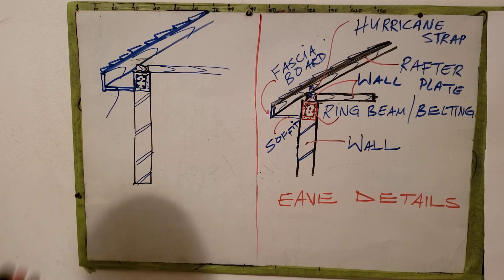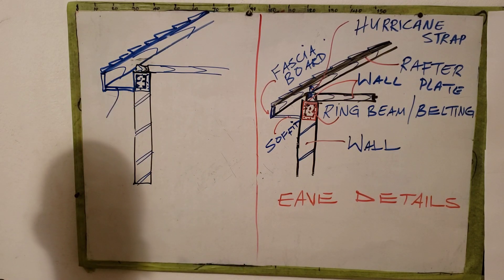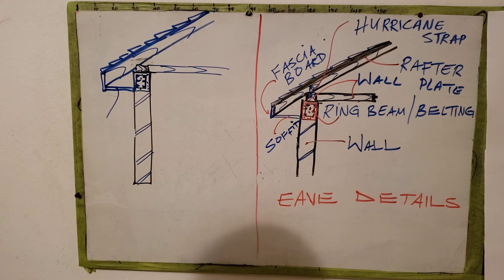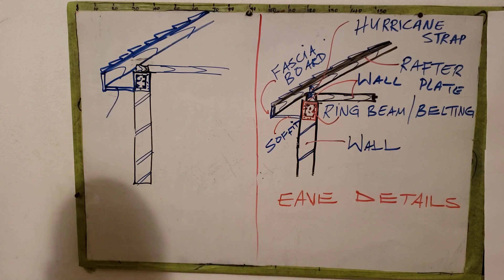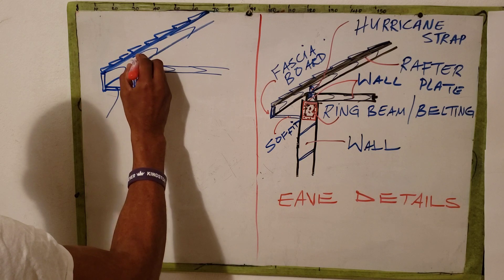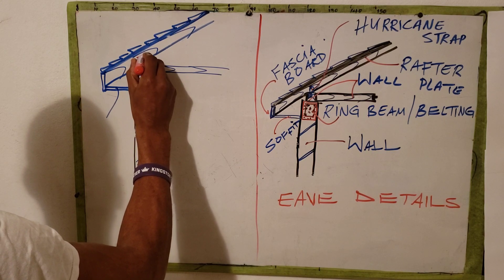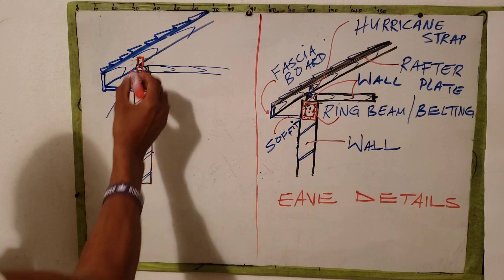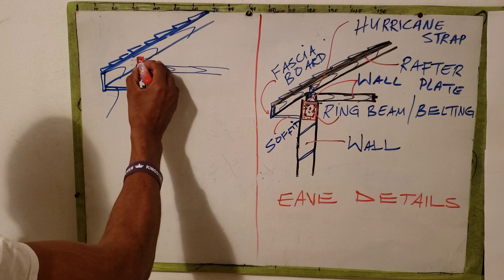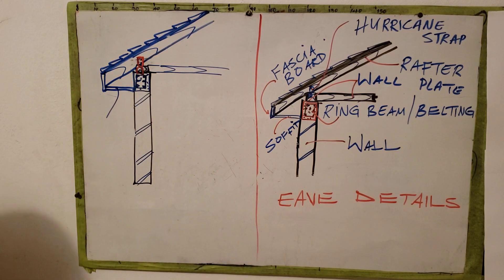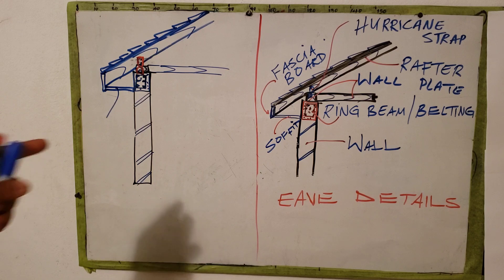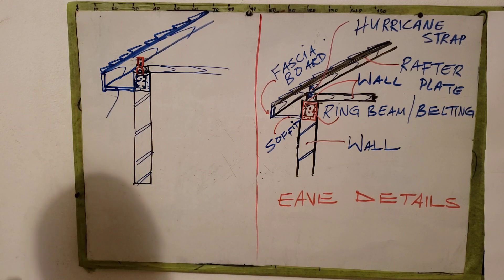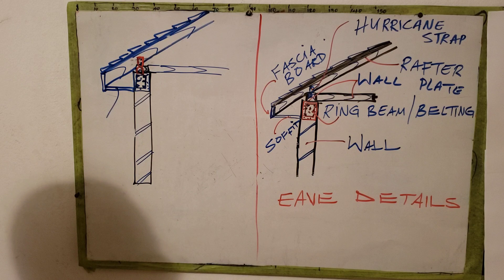So that's basically how you sketch. We could add our hurricane strap. In some cases, they might ask you to include some additional fastening devices. You might want to show like the J-bolt. That would be hurricane strap. You could also show the hidden detail for the J-bolt. All right, so this is your eave detail. Be able to look out for it. They might just send it back this year on CSEC.